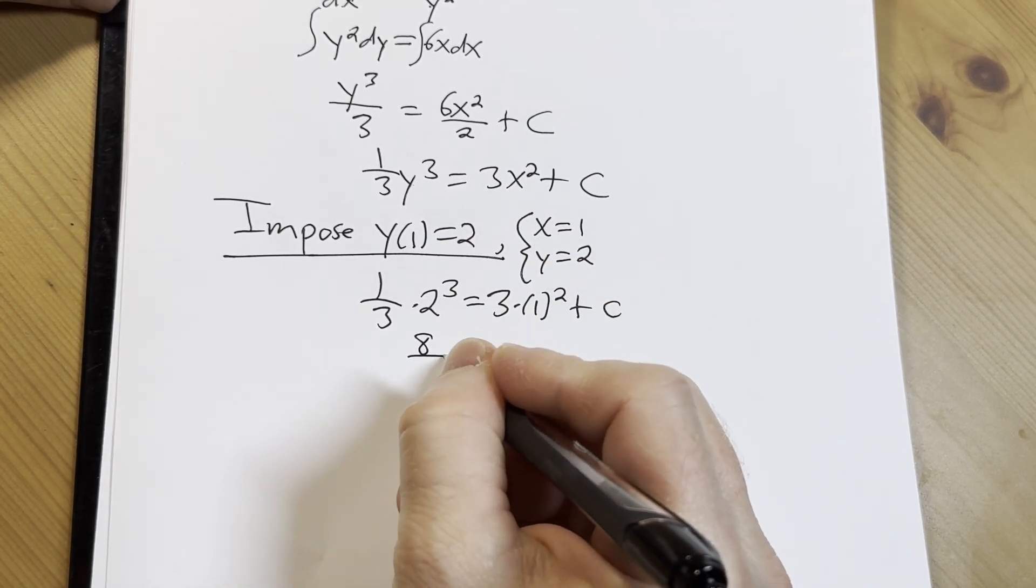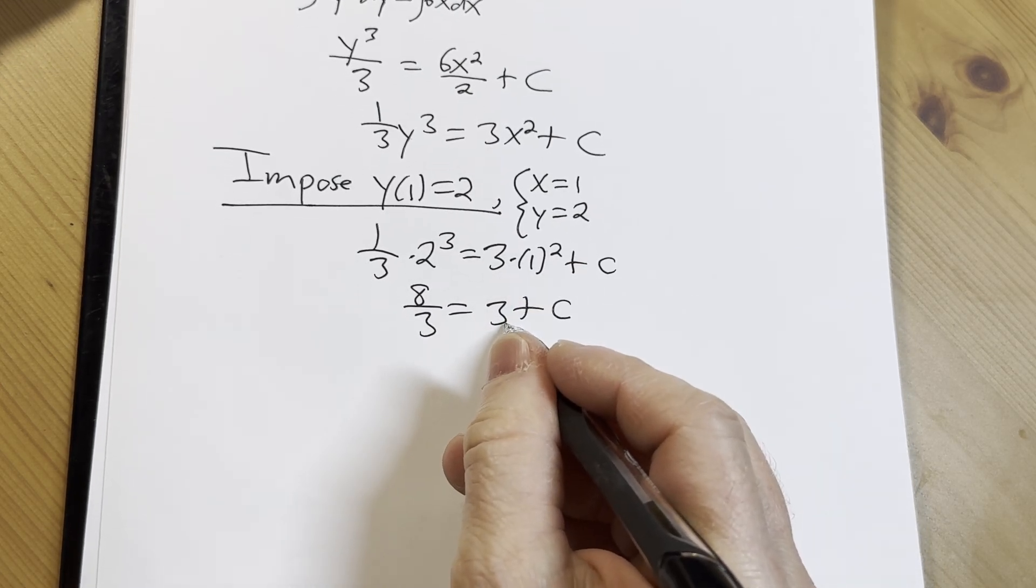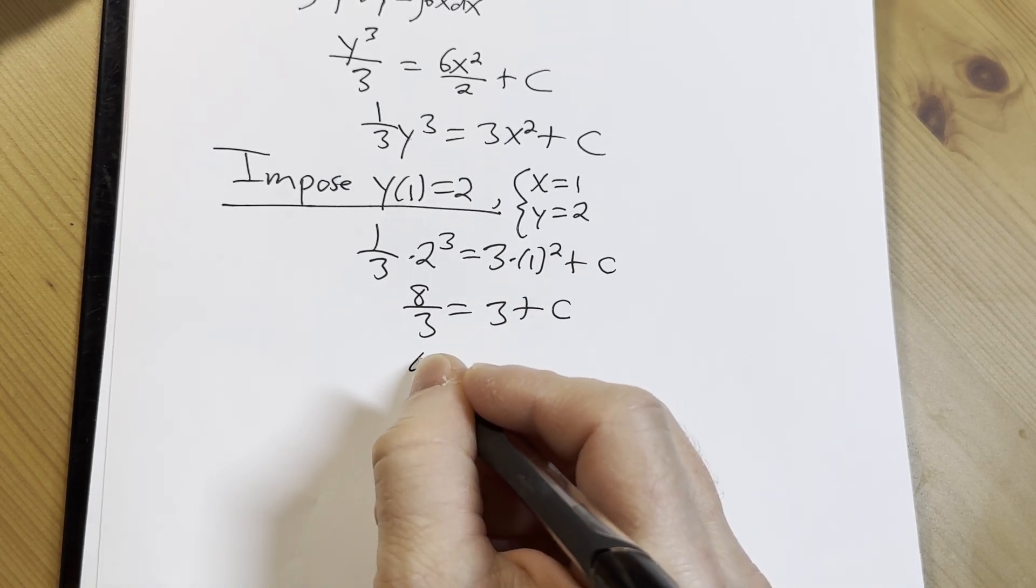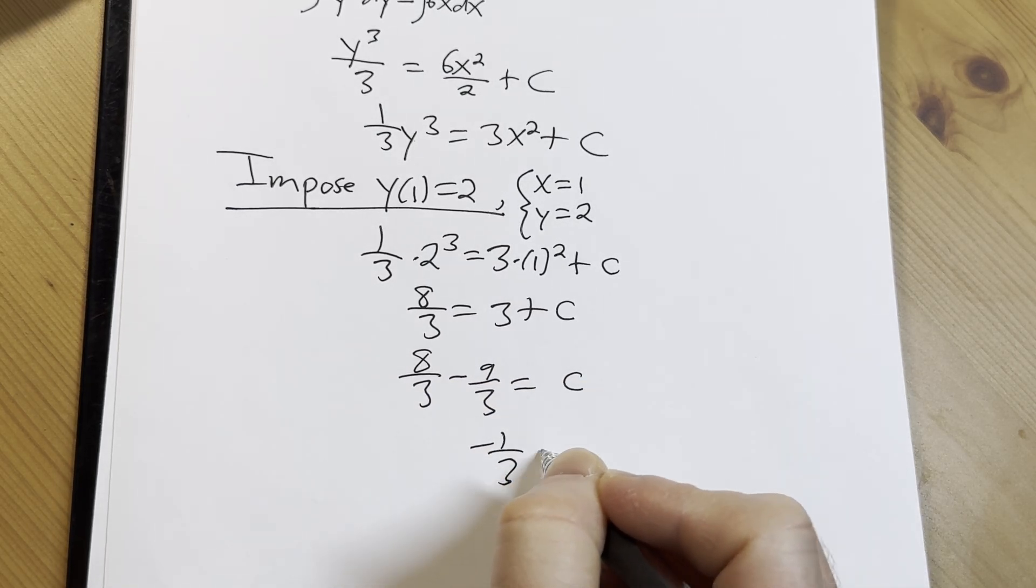2 cubed is 8, so we have 8 thirds equals 3 plus C. And we're going to subtract 3 from both sides. So we get 8 thirds minus 3, which is 9 thirds. So C is negative 1 third.